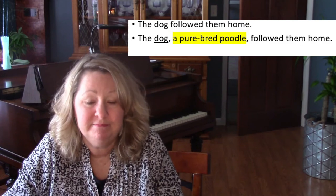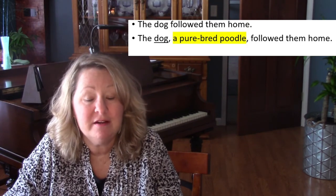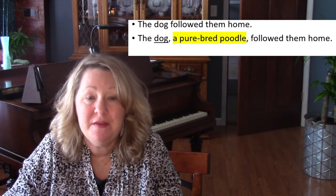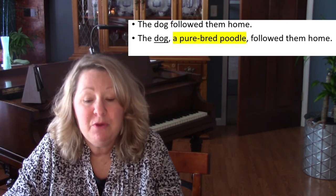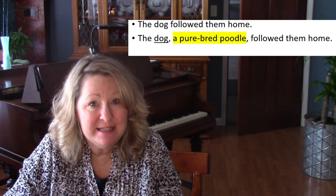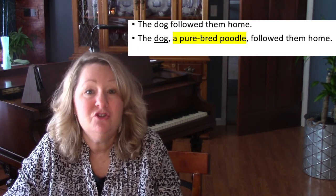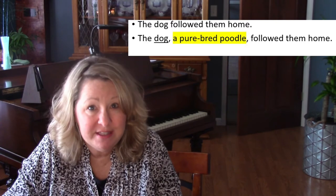The second way to make your sentences longer is to add an appositive. An appositive is a noun phrase that renames a noun in the sentence, either preceding that noun or coming after it. Here's an example sentence: 'The dog followed them home.' Let's add an appositive: 'The dog, a purebred poodle, followed them home.' A purebred poodle renames dog, and notice that appositives are set off with commas.